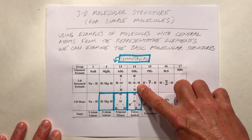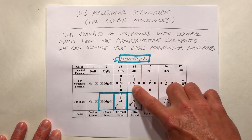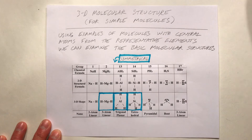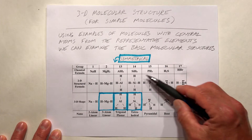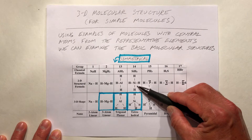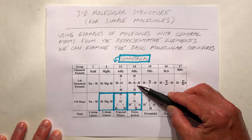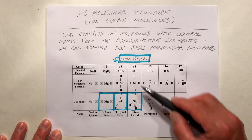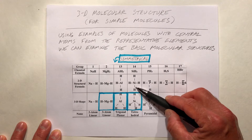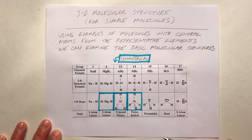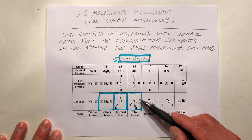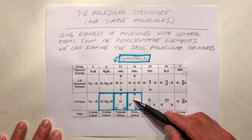In two dimensions, it looks like bond angles here would be 90 degrees. The bond angle is the angle between the bonds. But that's not actually what happens in three dimensions — we get larger than 90 degree angles in three dimensions.